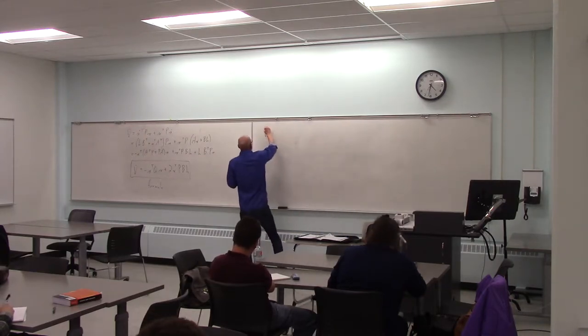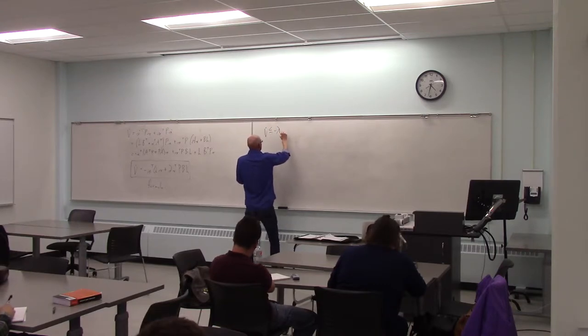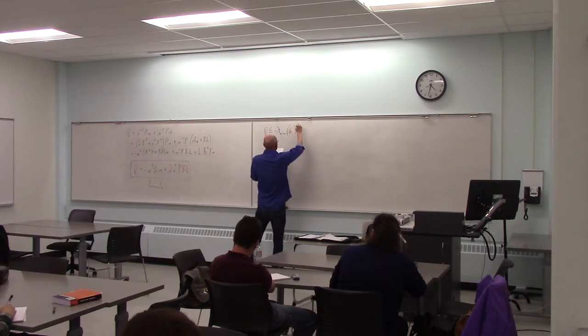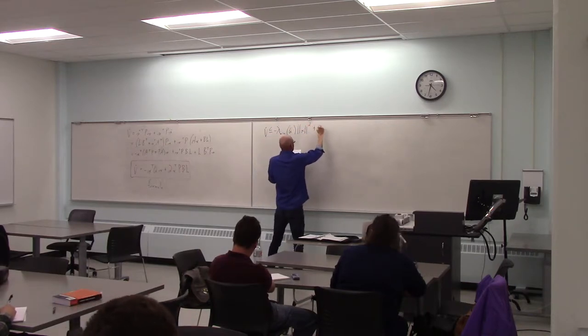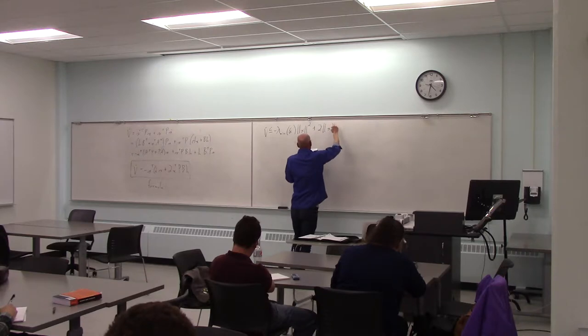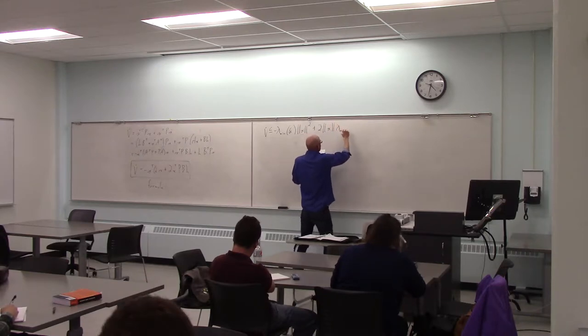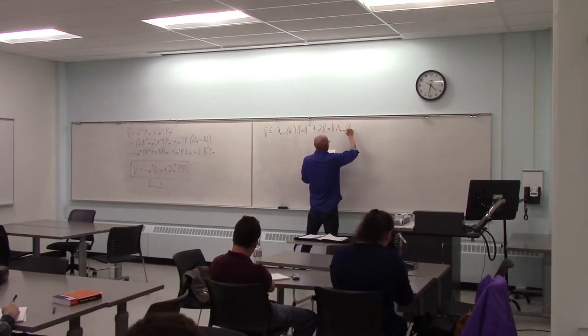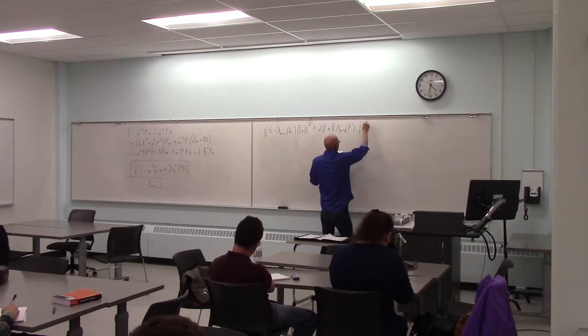So I have v dot is less than or equal to negative minimum eigenvalue of q times norm of x squared plus 2 times the norm of x times the maximum eigenvalue of p times the magnitude of h.